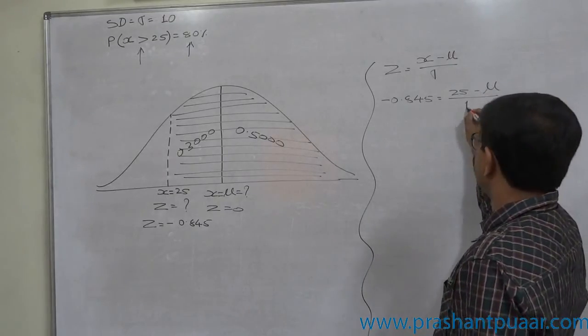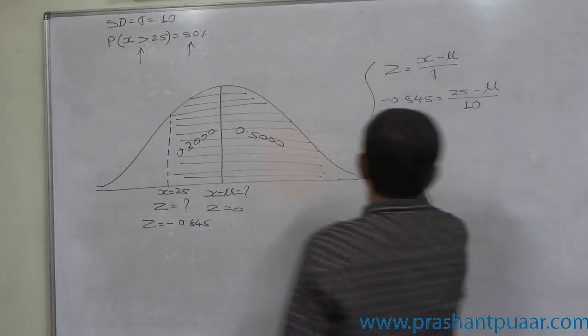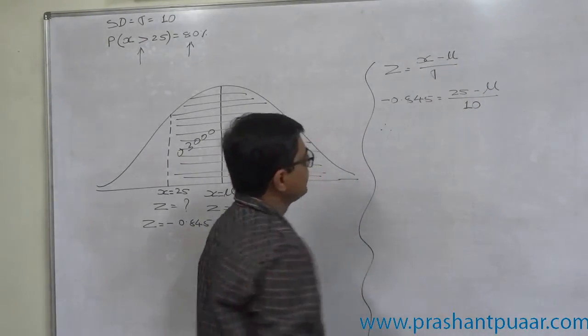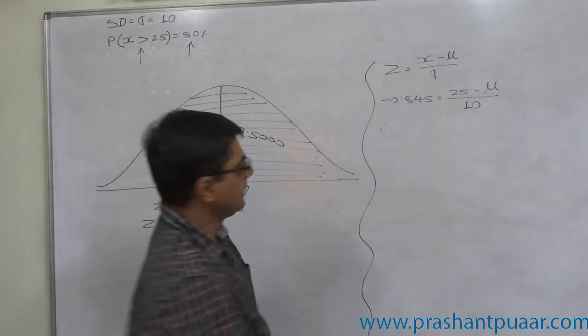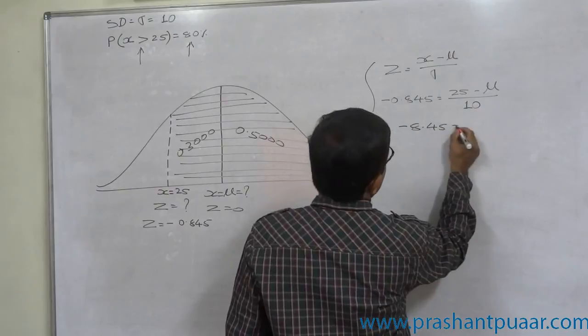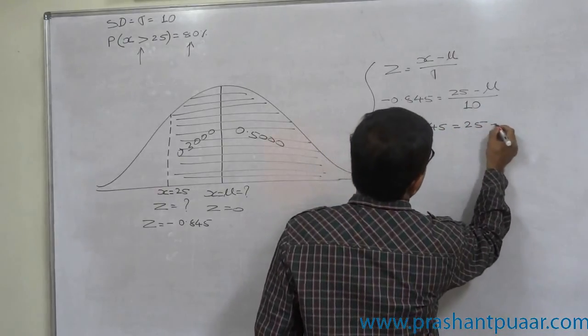And standard deviation is given to be 10. Therefore, 10 into minus 0.845, that will be minus 8.45, equals to 25 minus mu.